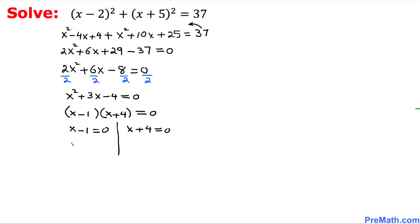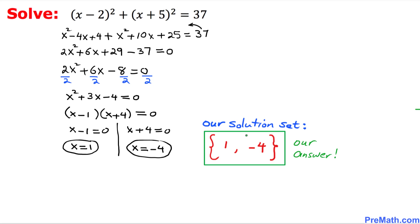That means one of the solutions turns out to be x equals positive 1, and the second one is x equals negative 4. So our solution set turns out to be {1, -4}, and that is our final answer.